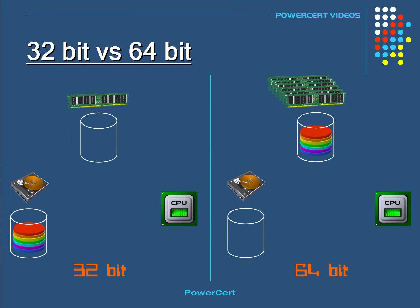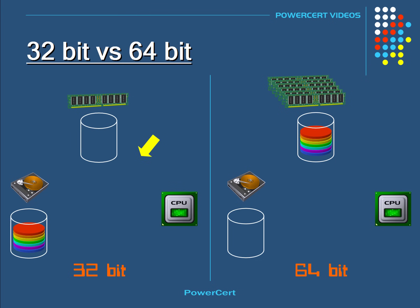In a computer, in order for data or a program to run, it needs to be loaded into RAM first. The data is stored on the slower hard drive, and from the hard drive it's loaded into the faster RAM. Once it's loaded into RAM, the CPU can now access the data or run the program.